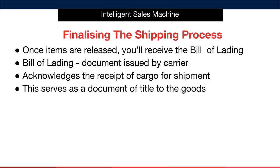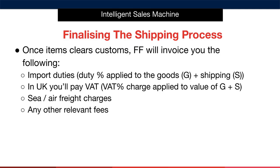Let's talk about what happens to finalise a shipment and then finish out the module. So once your items are released after you pay the supplier, you'll receive the bill of lading. The bill of lading is a document issued by the carrier. It acknowledges the receipt of cargo for shipment and serves as a document of title to the goods. It's an important document, so make sure you receive it.